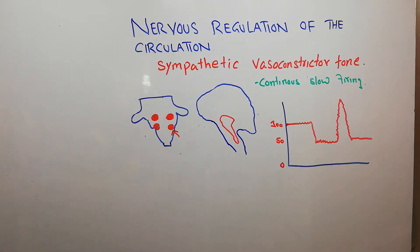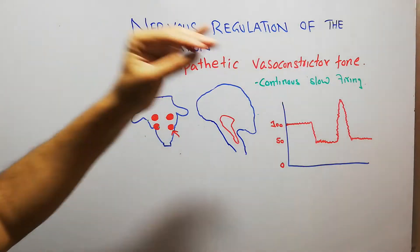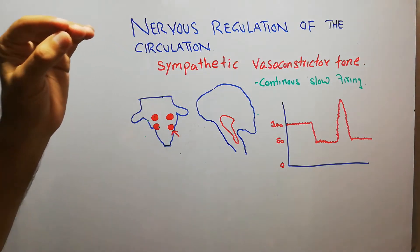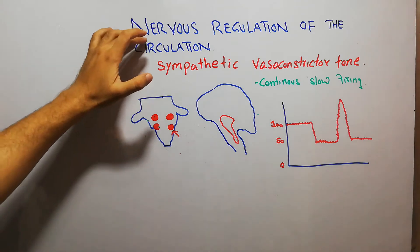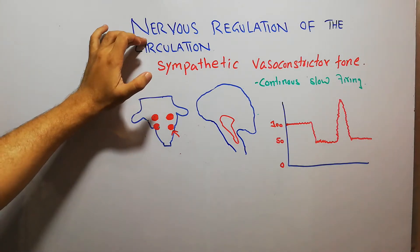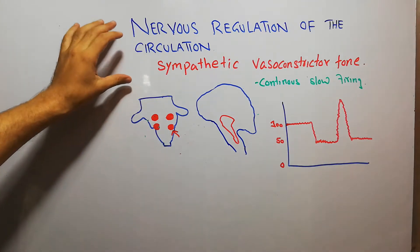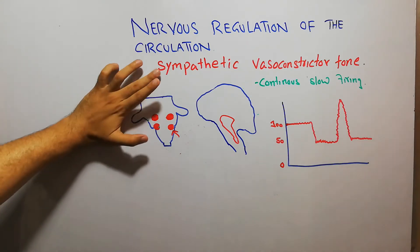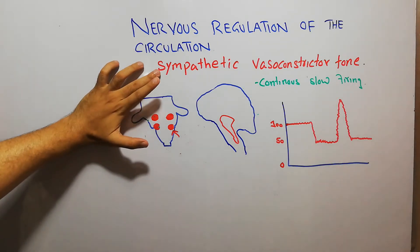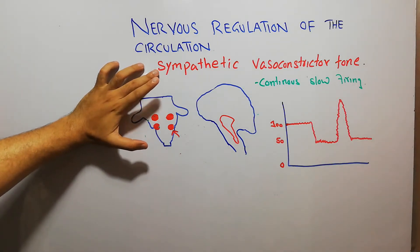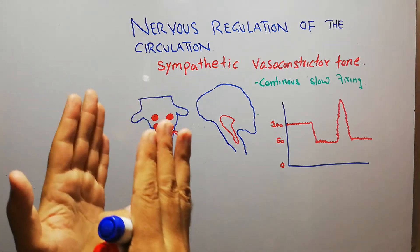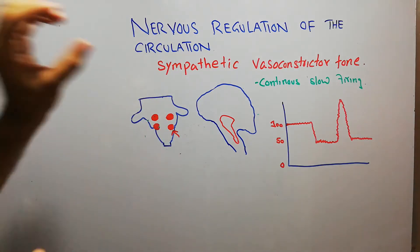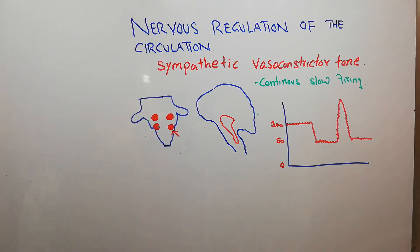The nervous regulation of the circulation is most commonly achieved with the help of the autonomic nervous system. Within the autonomic nervous system, the most important component is the sympathetic nervous system, although the parasympathetic system is also important.